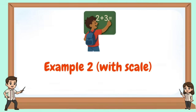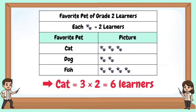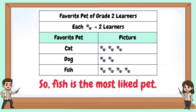Example 2, with scale: Favorite pet of Grade 2 learners. Each paw is equal to two learners. Cat has three paws — three times two equals six learners. Dog has two paws — two times two equals four learners. Fish has four paws — four times two equals eight learners. So fish is the most liked pet.